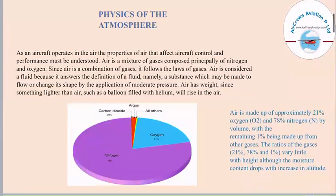Let us know more about the physics of the atmosphere. As an aircraft operates in the air, the properties of air that affect aircraft control and performance must be understood. Air is a mixture of gases composed principally of nitrogen and oxygen. Since air is a combination of gases, it follows the laws of gases. Air is considered a fluid because it answers the definition of a fluid, namely a substance which may be made to flow or change its shape by the application of moderate pressure.